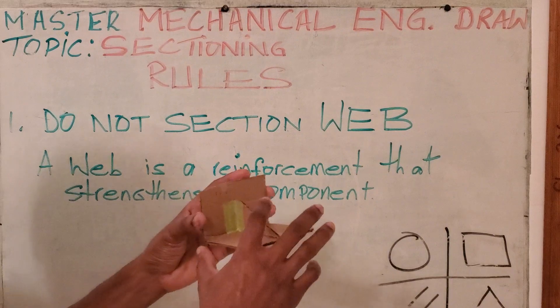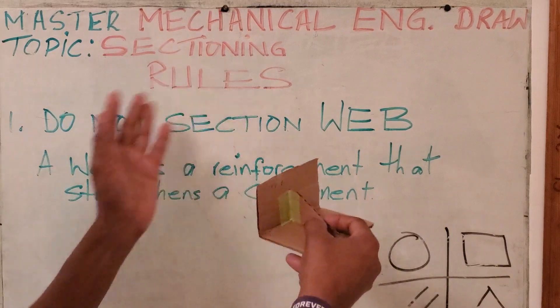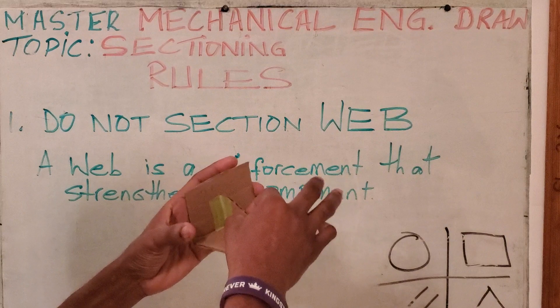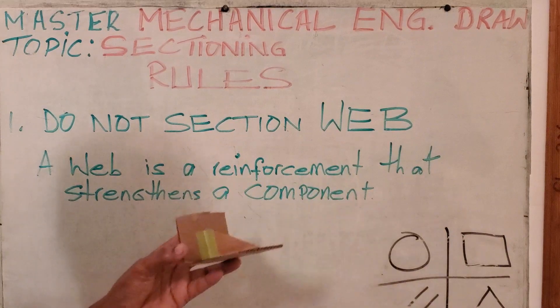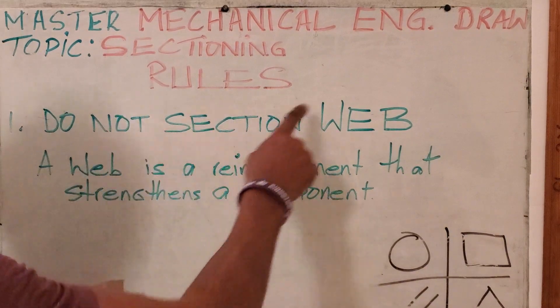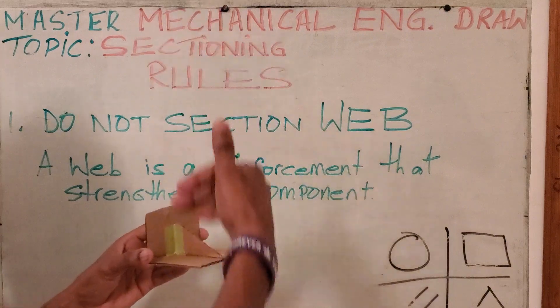So this web, the web which is here, prevents this one going back and forth. And this as well. So this is referred to as a web. And we do not section web on the elevation.